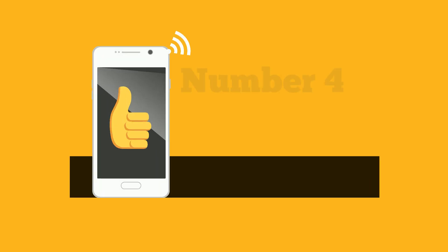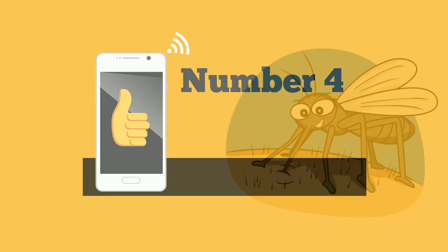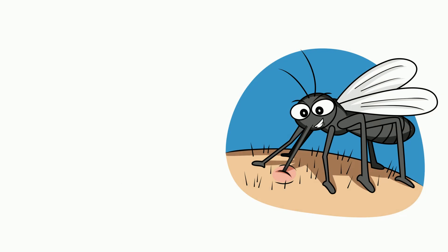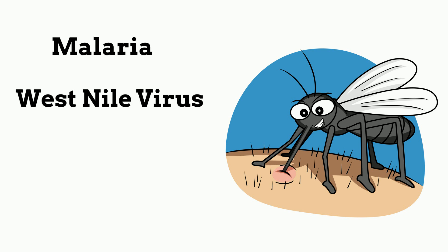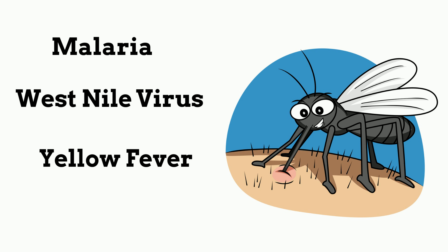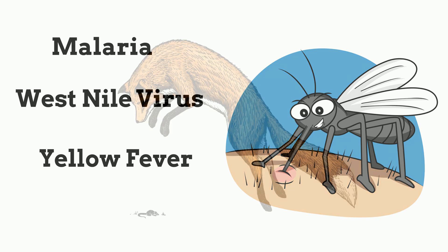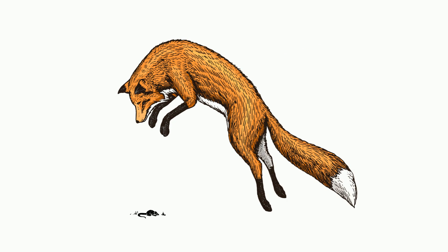Number four, parasites may spread many diseases. Mosquitoes spread many diseases including malaria, West Nile virus, and yellow fever. This rarely happens in the predator-prey relationship.